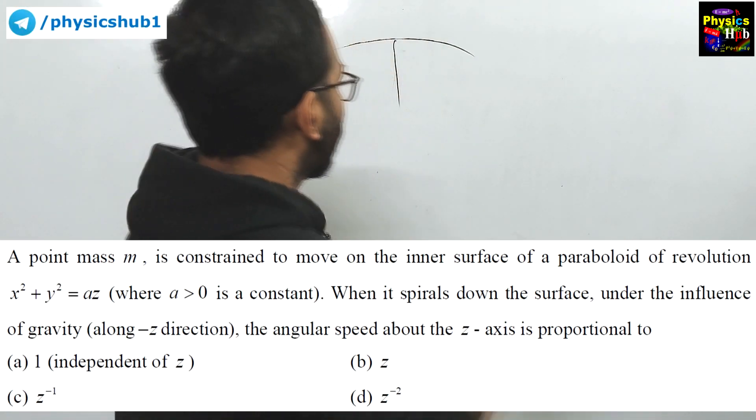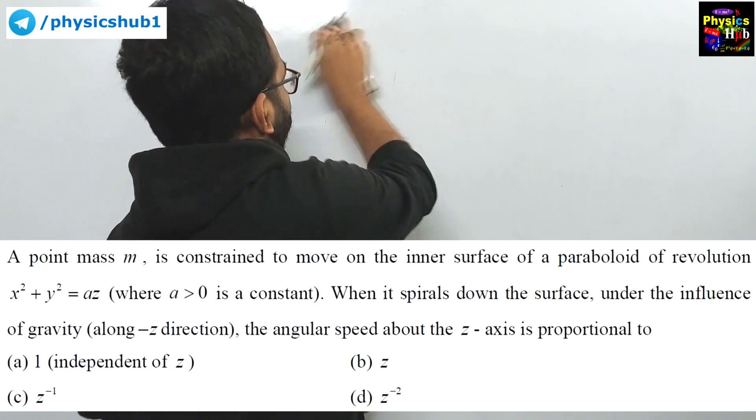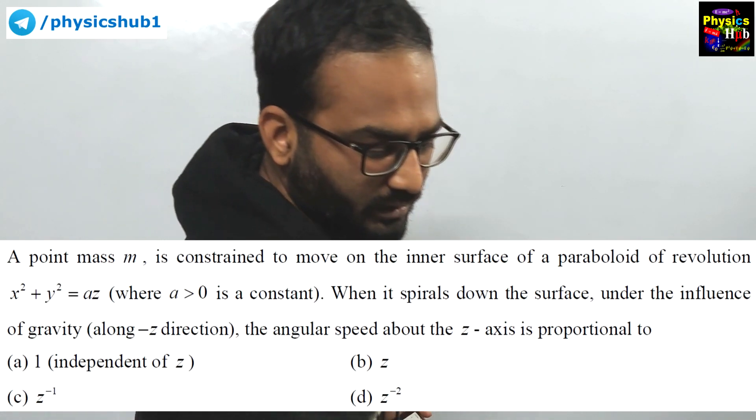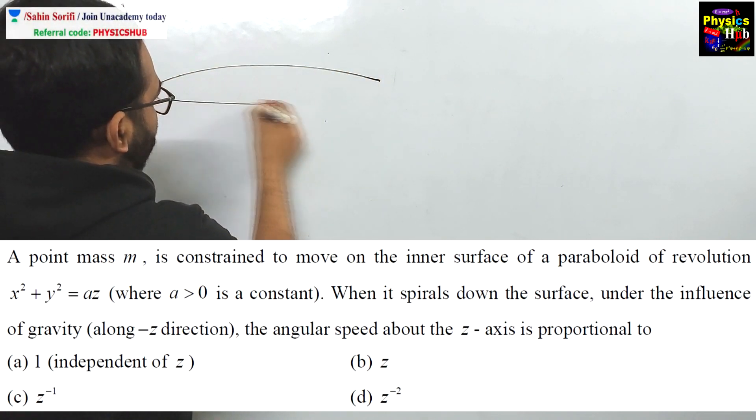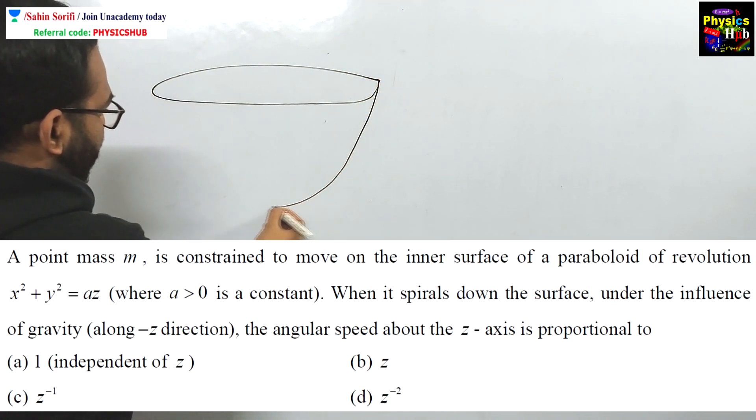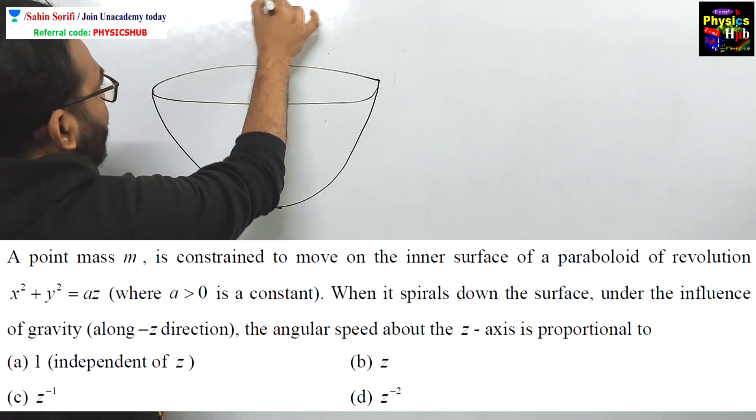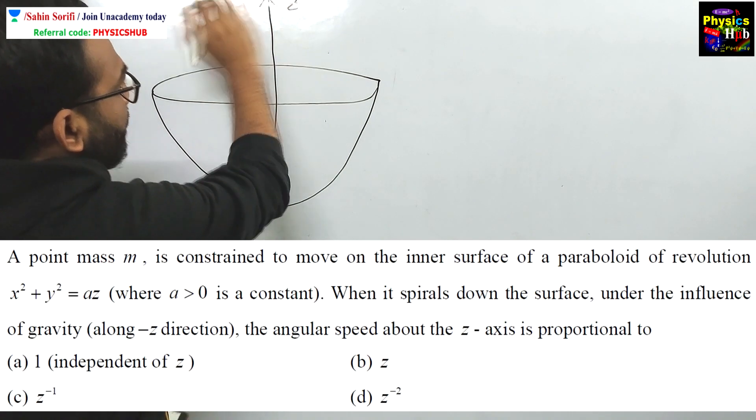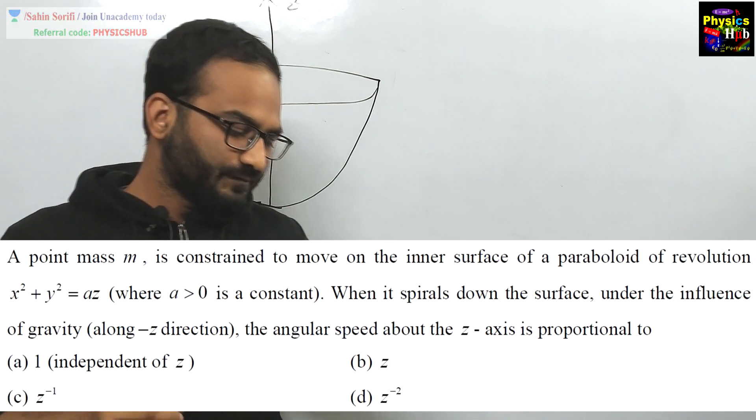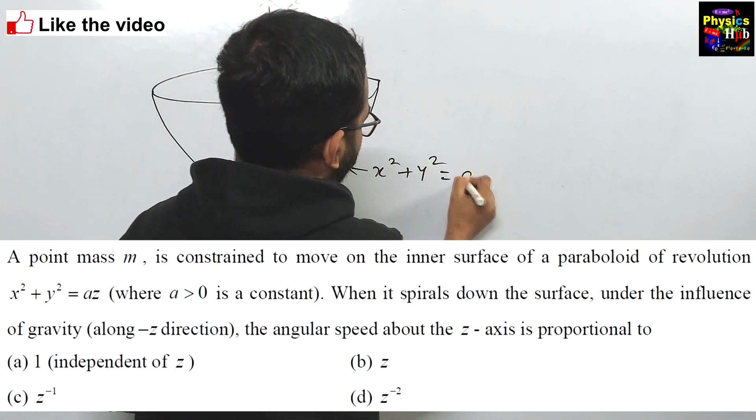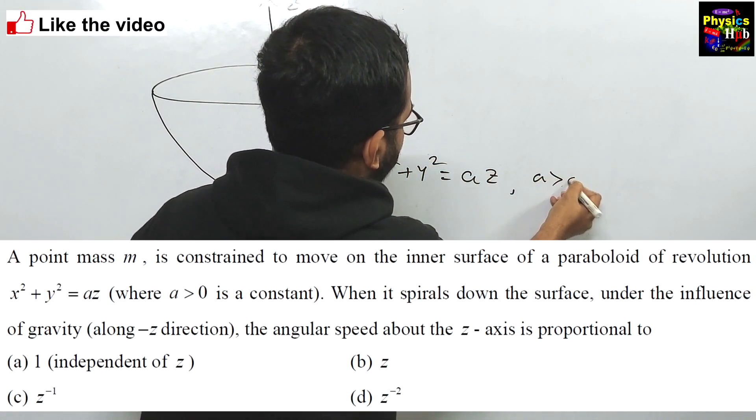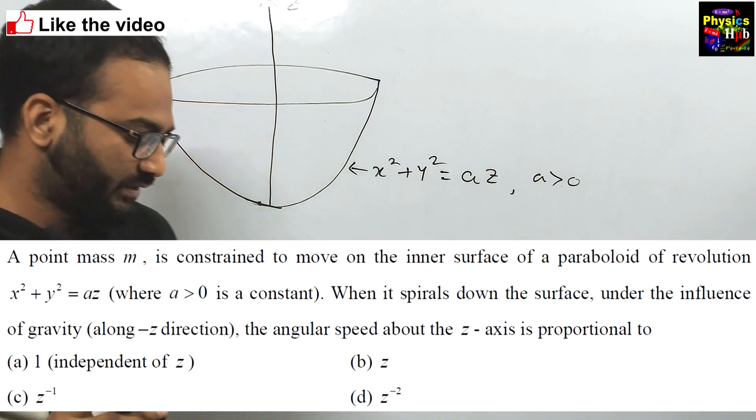What is a paraboloid? Parabola we know in two dimension. The three-dimensional generalization is the paraboloid. You can consider some bowl-like structure as the paraboloid. Let us set this axis as the z axis. Now the equation is given to you x square plus y square equals to az, a is greater than 0. That is fine, no issue with it.